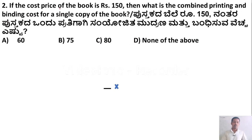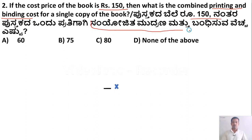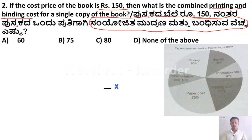The next question: if the cost price of the book is Rs. 150, what is the combined printing and binding cost for a single copy? Printing cost is 20% and binding cost is also 20%. So total combined printing and binding cost is 40%.